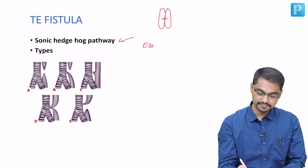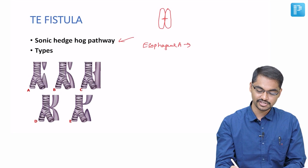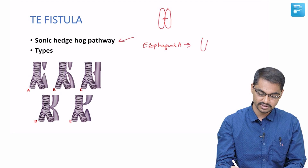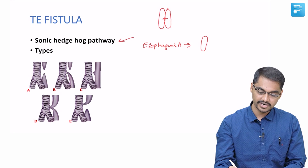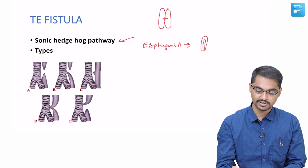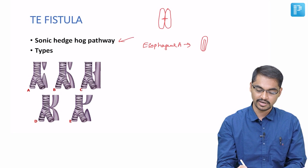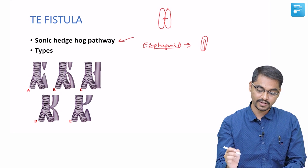Esophageal atresia results from failure of re-canalization of the primitive foregut bud. Normally, it should re-canalize, and if there is a failure of re-canalization of this primitive esophageal bud, you will have esophageal atresia.